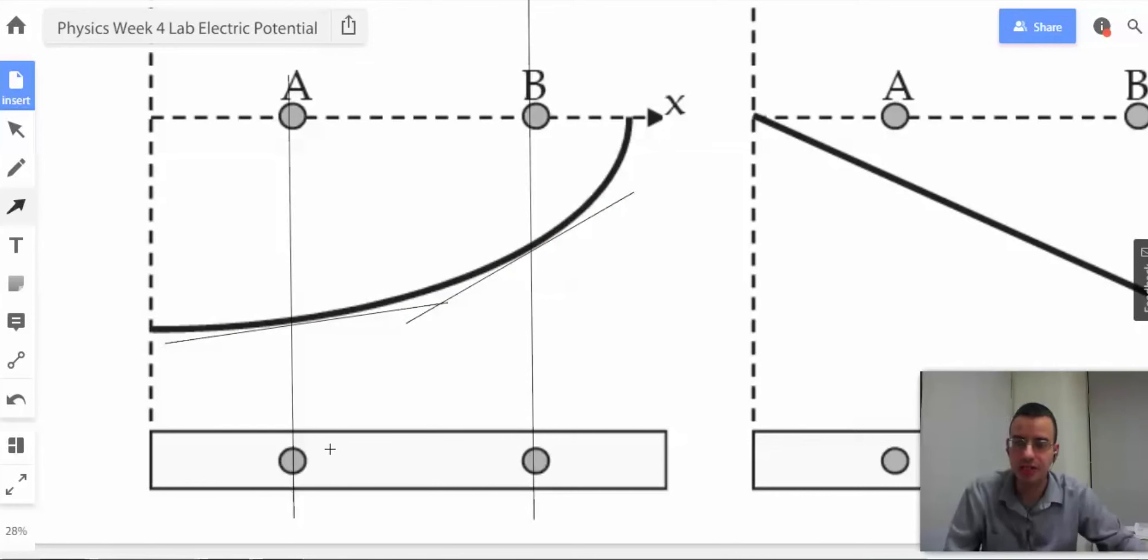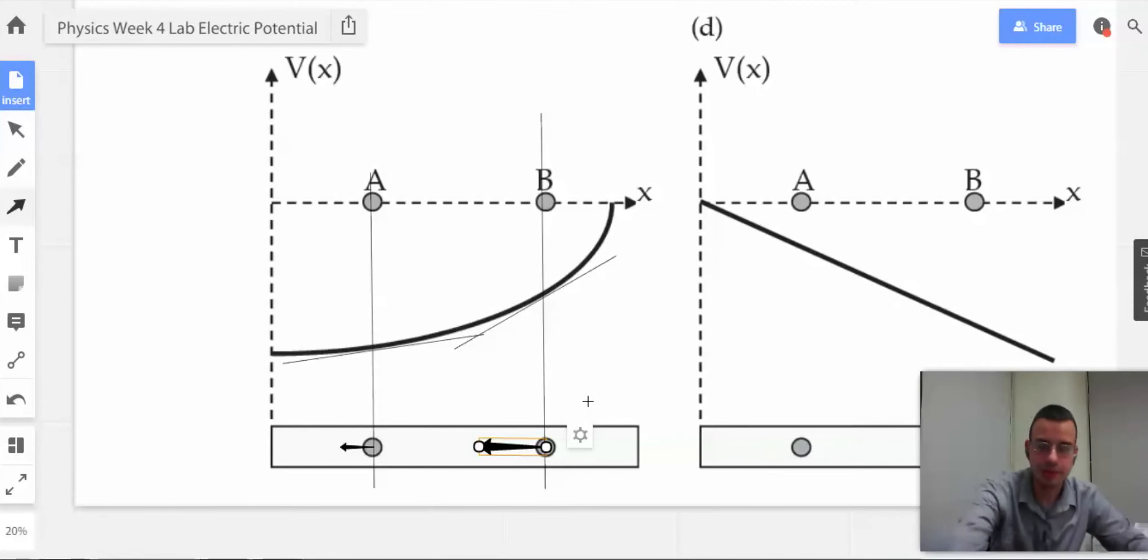Two more tangent lines. This derivative here is positive and it's slightly upward, so it's going to be negative slightly. And then this guy, he's greatly positive, so he's going to be greatly negative. Okay, got it.